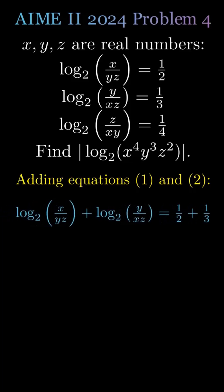Log base 2 of x divided by yz plus log base 2 of y divided by xz equals 1 half plus 1 third. Using logarithm properties, log base 2 of x divided by yz times y divided by xz equals 5 sixths.